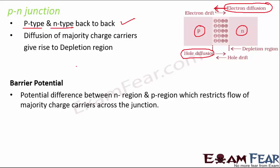Because of this diffusion of majority charge carriers, a depletion region is formed as positive and negative charges accumulate at the junction. Initially, diffusion current is very large while drift current is very small. Diffusion current is due to majority charge carriers and drift current is due to minority charge carriers, with their directions exactly opposite to each other.